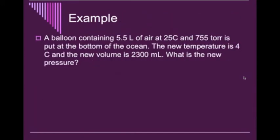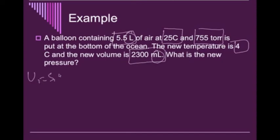Now, another example. It says a balloon containing 5.5 liters of air at 25 degrees Celsius and 755 torr is put at the bottom of the ocean. The new temperature is 4 degrees Celsius, and the new volume is 2,300 milliliters. What is the new pressure? Now, the first thing we have to realize is that our volumes are in different units. When we work it out, they have to be in the same unit. So we look at it, and we see that our V1 is going to be 5.5 liters. Our temperature, or T1, is going to be 298.15 Kelvin. And our pressure, or P1, is going to be 755 torr.